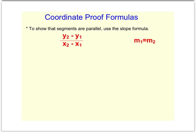It might be a good idea to jot down the slope formula on the side somewhere, just as a reminder if we haven't used it for a while. Remember, the difference of the y values are on top and the difference of the x values on bottom. The symbol for slope is m. We're just going to prove that one slope is equal to another slope — that's what we'll be doing today.